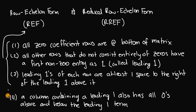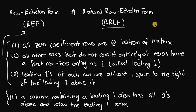If it also meets the fourth rule — so if it meets all four rules — then the matrix is in reduced row echelon form. Let's talk about each one of these rules.